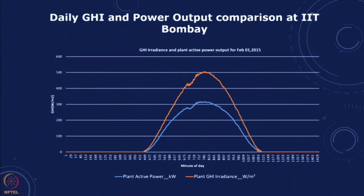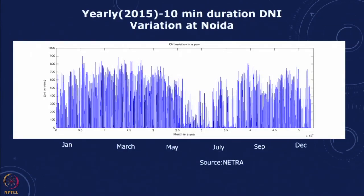You can see the global horizontal insolation in watts per square meter for a particular location of a PV module on the IIT campus, and the generation actually follows the insolation data. We can also look at the DNI variation over the years, for a particular site at Noida. Every day the DNI goes up and down, but there is a variation within the seasons and fluctuation — this is one of the issues when it comes to solar.